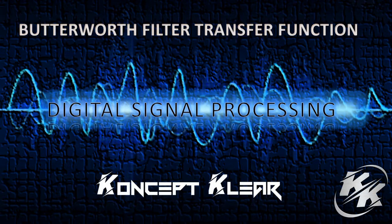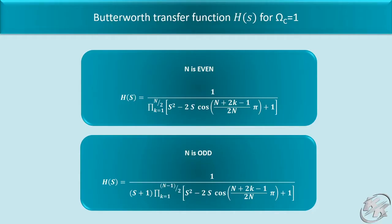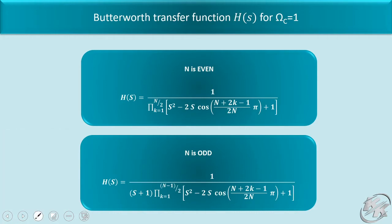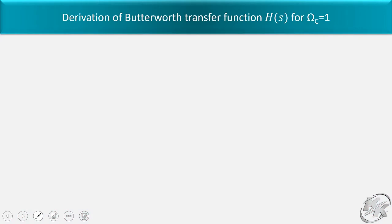Hello friends, today we will see the Butterworth Filter Transfer Function. The Butterworth Transfer Function H(s) for normalized frequency ω_c equal to 1 is given as shown in figure, according to the value of n, whether n is even or n is odd. Let's derive the Butterworth Transfer Function H(s).